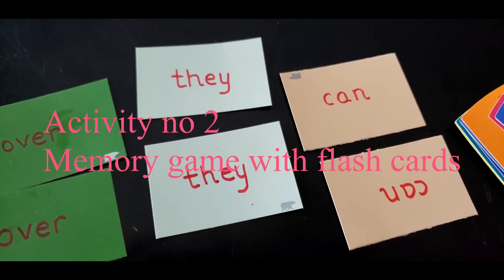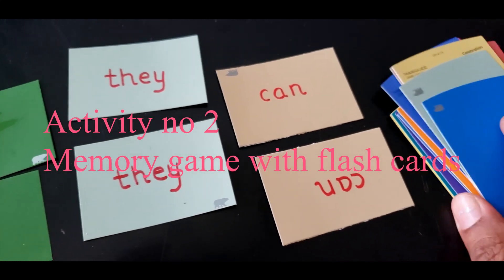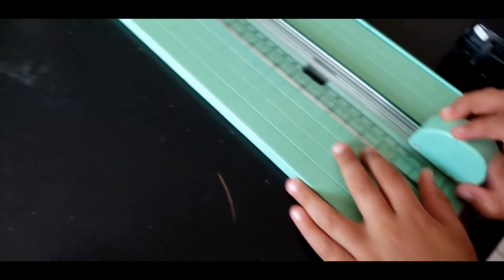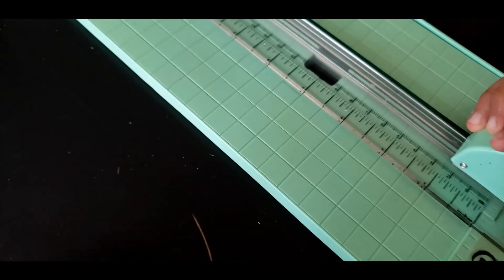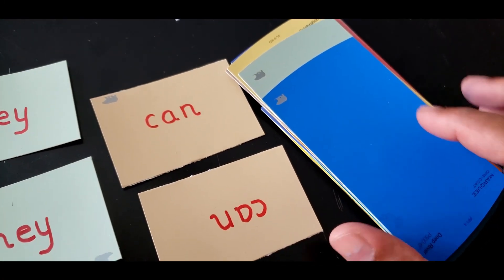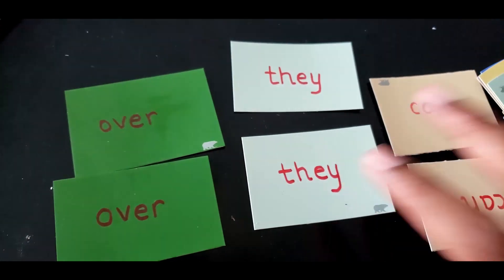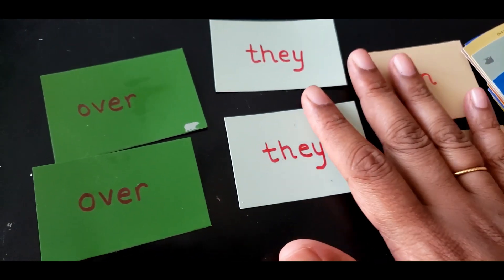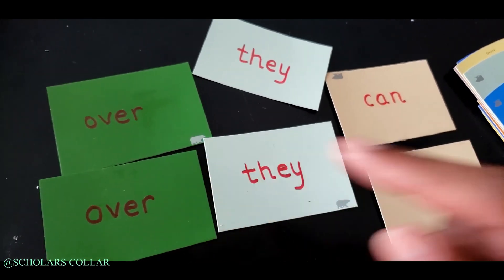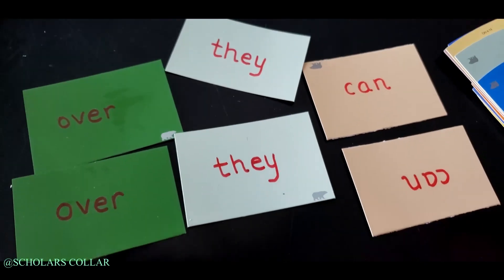Activity number two is a memory game, very simple and easy. I've used the same paint sample cards and cut them in two equal parts with a scoreboard or cutter board. I have three cards here, so I have six cards after cutting them in halves, giving me two cards of the same color.